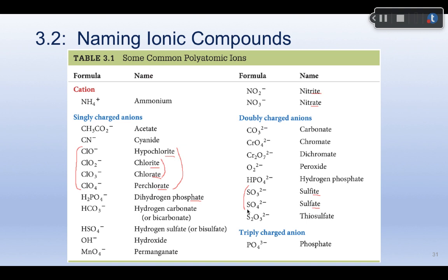It will take practice to learn them — it won't happen overnight. Notice that almost none of the polyatomic ions have an -ide ending; that's usually reserved for simple monatomic anions like chloride, sulfide, and oxide. The only exceptions on this list are cyanide and hydroxide. Also, almost all polyatomic ions are anions; the only polyatomic cation is ammonium. Keep this list handy while doing homework.